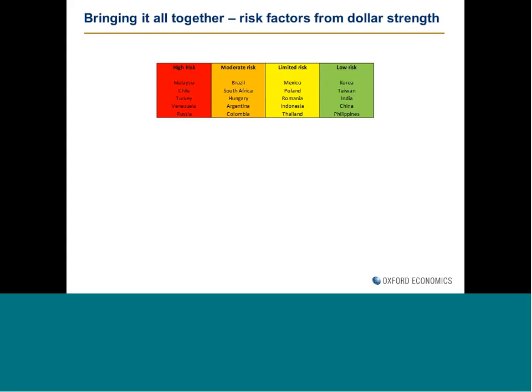China is an interesting one — although in volume terms it has quite a lot of dollar debt, as a proportion of the overall economy it isn't that large, which is one of the reasons it ends up in the green low risk group. Worth bearing in mind that all this is based on the data we have, and there are uncertainties about just how much external debt is out there, especially with the growing phenomenon of offshore debt issuance by affiliates of companies within emerging markets. So there's always a degree of margin of error in these kinds of estimates.